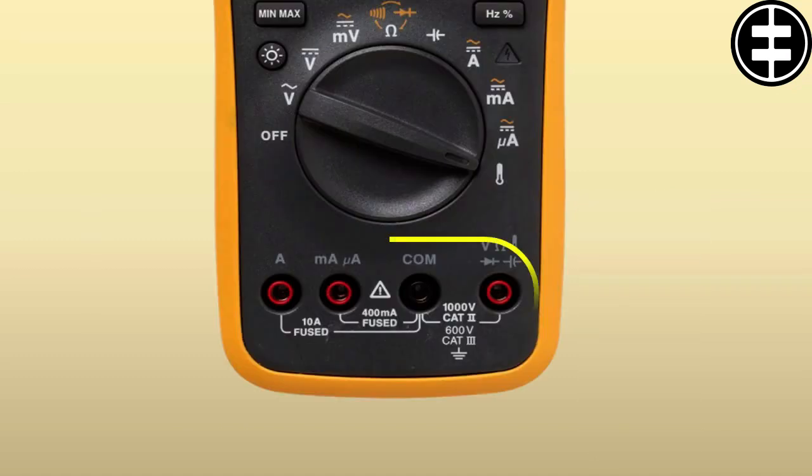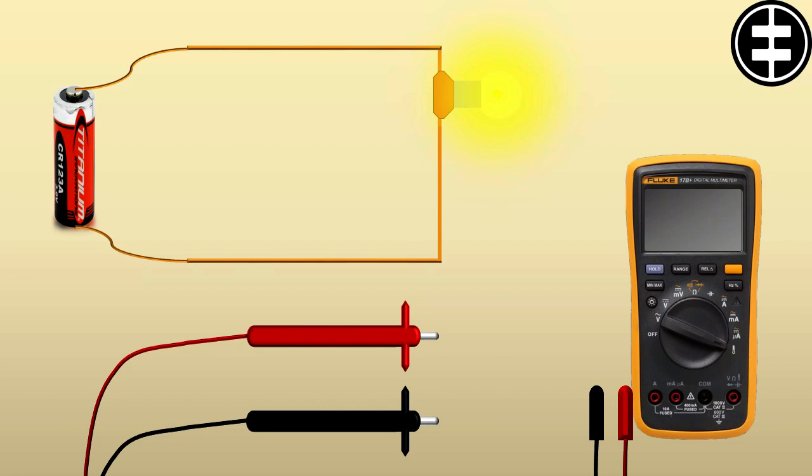As here in our multimeter, we have 4 ports. Two of them are designed to measure current. This port, as printed downside, is designed and fuse protected to measure values less than 400 milliampere. The other port is designed and fuse protected to measure current less than 10 ampere.